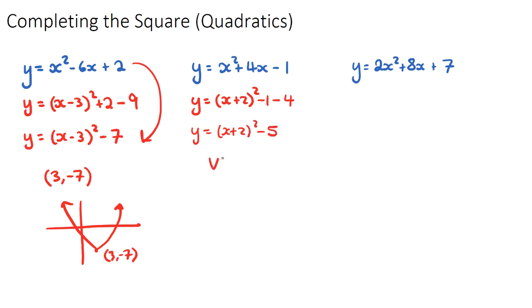And therefore, our vertex, our v for our vertex would be negative two, comma, negative five.